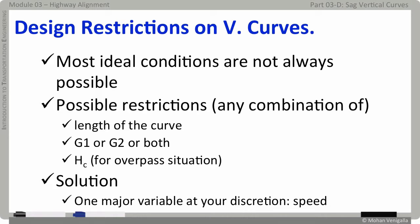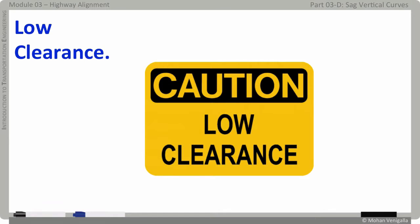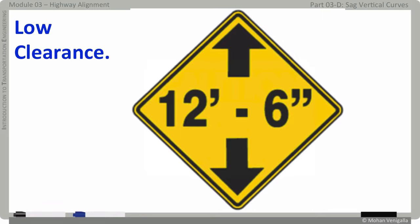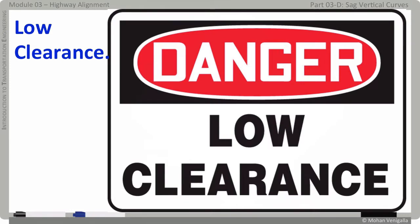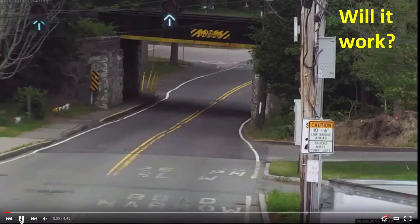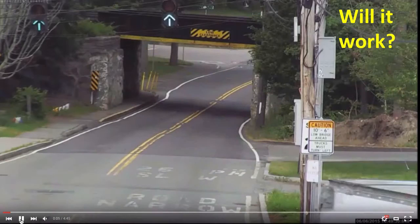Whatever is your final design, devise a proper communication mechanism to convey the design variables to the drivers. For example, even though AASHTO guidelines call for a minimum clearance of 14.5 feet, if the best you can do is 12.6 feet, put up a proper sign — something like 'Caution: Low Clearance' or 'Clearance: 12 feet 6 inches.' Use proper signage from MUTCD to convey that information to the drivers. Of course, not everybody is going to pay attention to the signs.